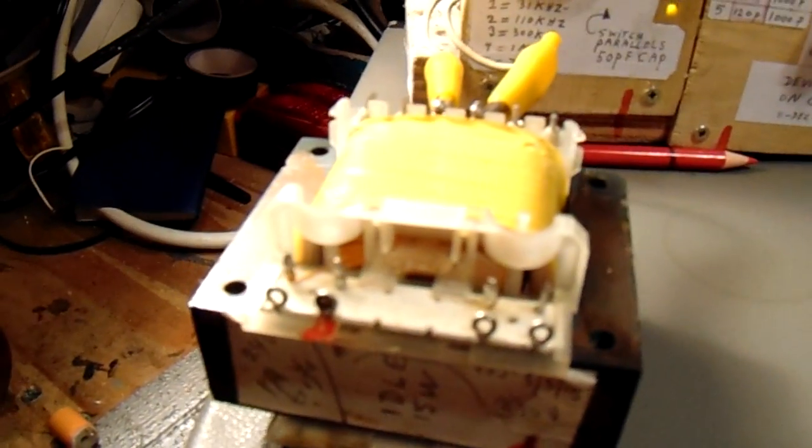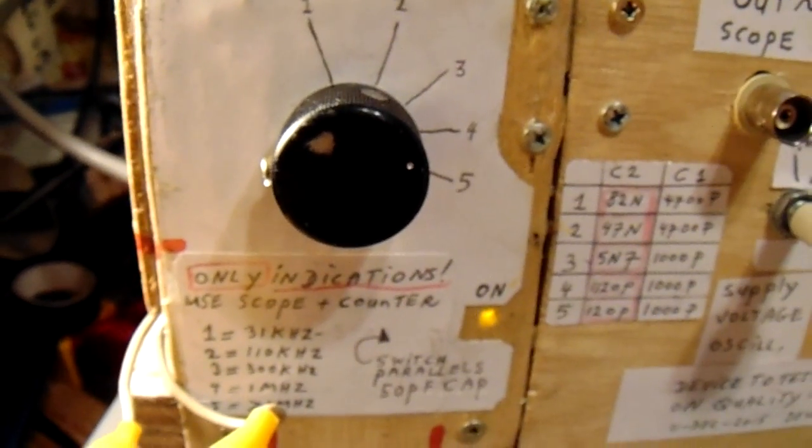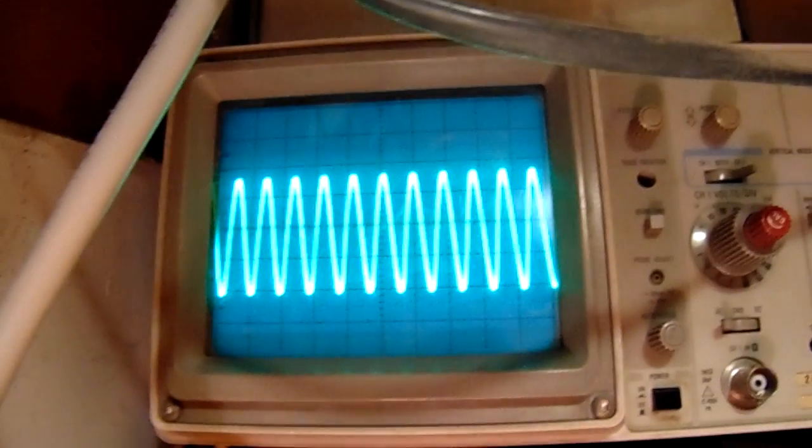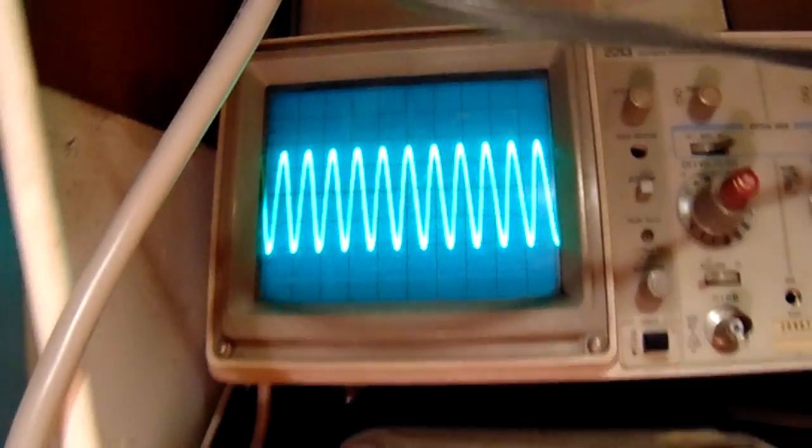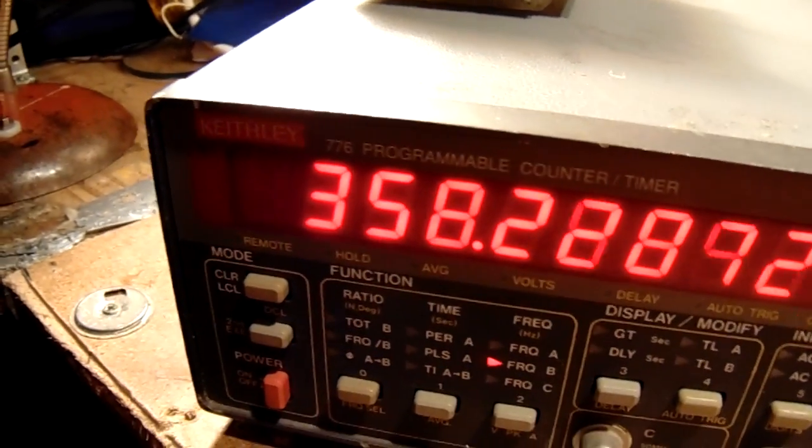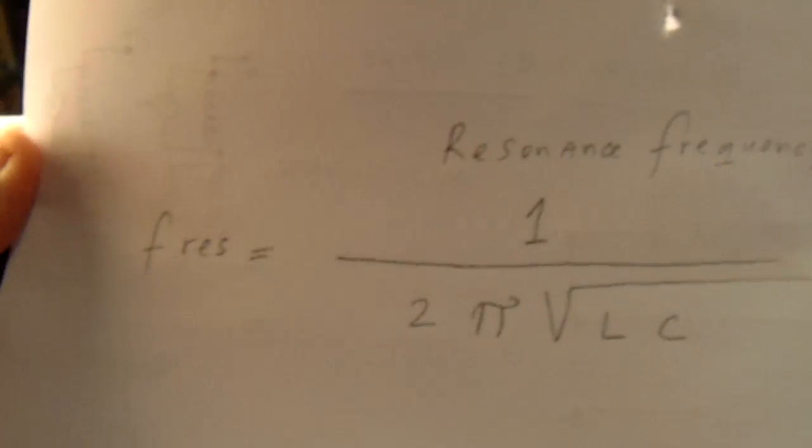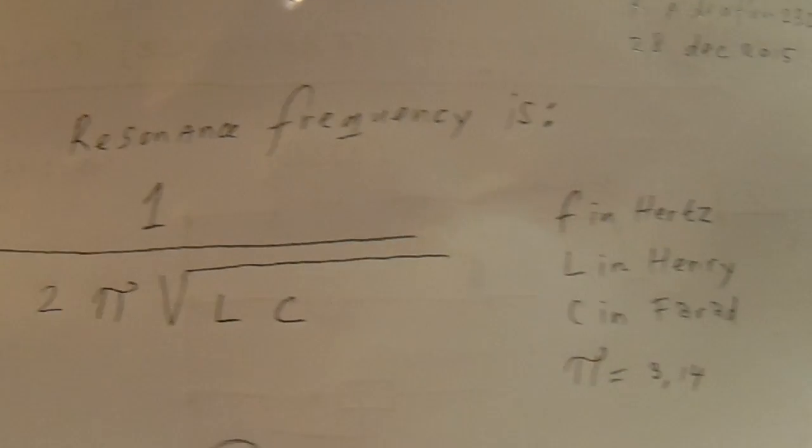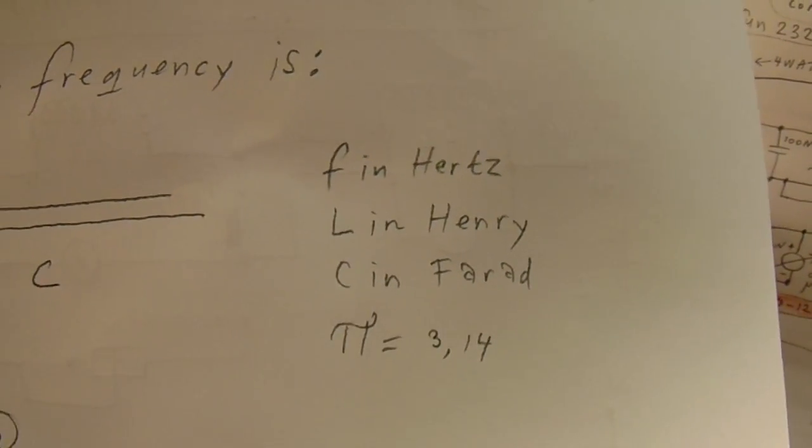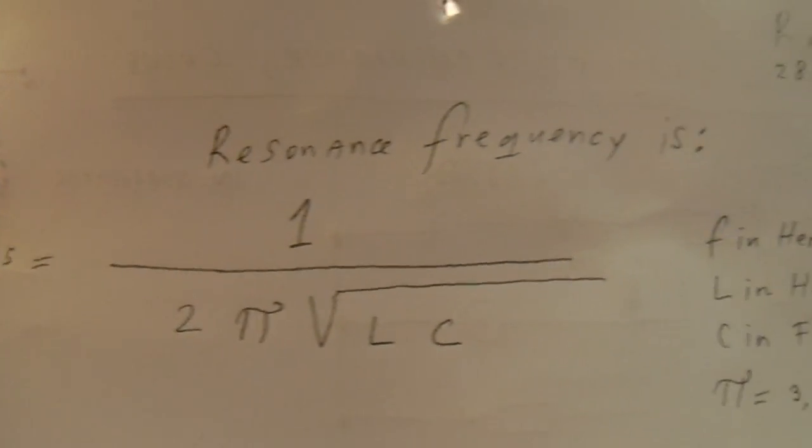It oscillates on my test oscillator that I've published before on YouTube. This is the oscillation. So the secondary from a 24 volts transformer oscillates here in my case, in this situation, on 358 kilohertz. And you can use this formula to find out the inductance from that secondary from the transformer.